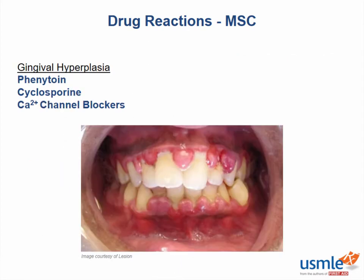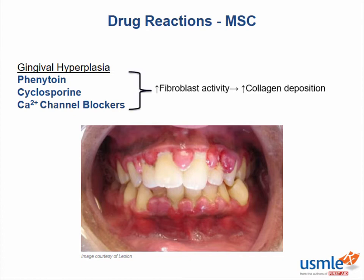Check out these sweet gums. Phenytoin causes gingival hyperplasia in 50% of cases, followed by the calcineurin inhibitor cyclosporin about 30% of the time. This side effect has also been seen with calcium channel blockers, but very rarely. These drugs somehow induce fibroblasts to deposit more collagen around the teeth. One out of five people that take phenytoin develop this problem, so watch out for this on test day.